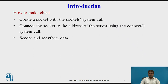The system calls for establishing a connection are somewhat different for the client and the server, but both involve the basic construct of a socket, and both processes establish their own sockets. Here are some steps involved in establishing a socket on the client side: create a socket with the socket system call, connect the socket to the address of the server using the connect system call, then send and receive data. The simplest way is to use the send-to and receive-from functions.